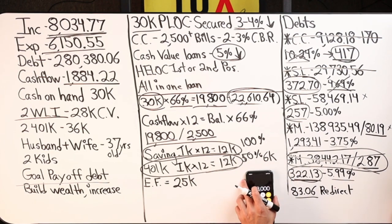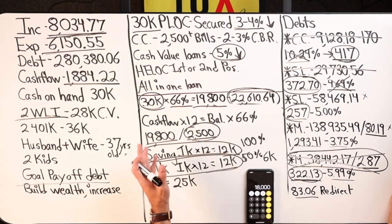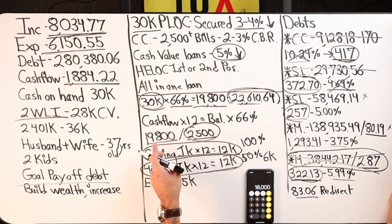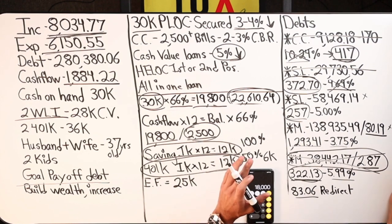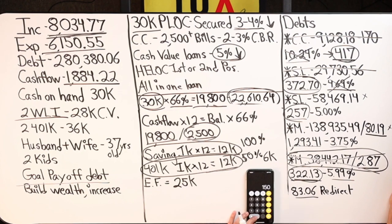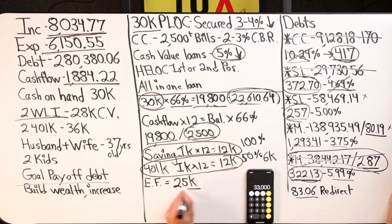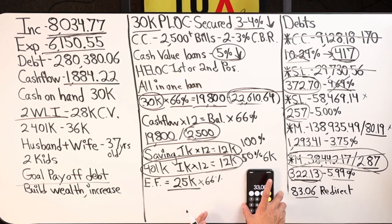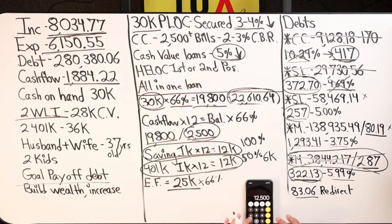So now we're at $6,000 plus $12,000, which is $18,000. Then we still have the free cash flow. Let's say they're comfortable with 50% of their cash flow — that's $15,000 — so we're at $15K plus $6K plus $12K, totaling $33,000 per year. Then for the emergency fund, maybe they're comfortable with half — $12,500 — so $12,500 plus $33,000 puts you right around $45,000.